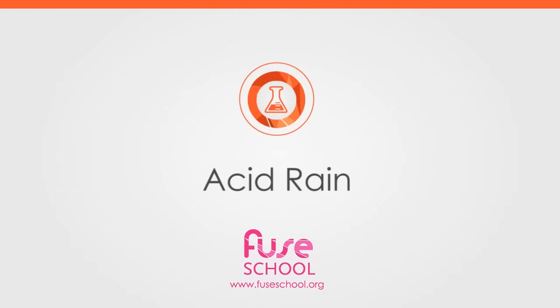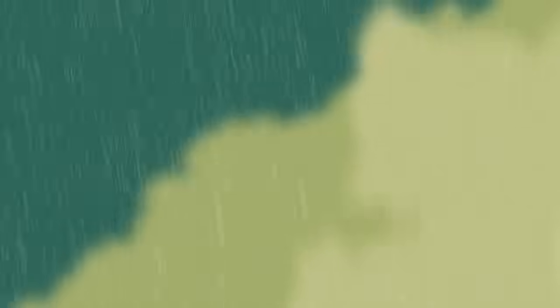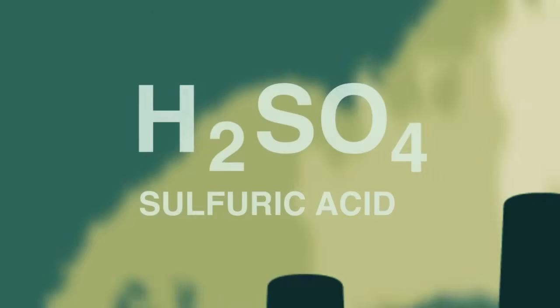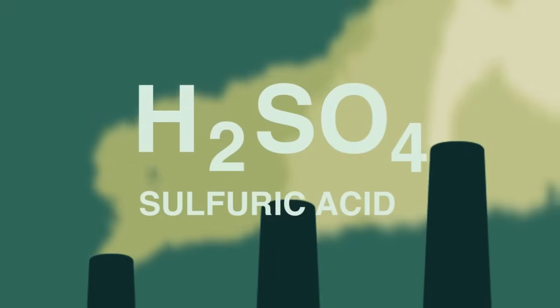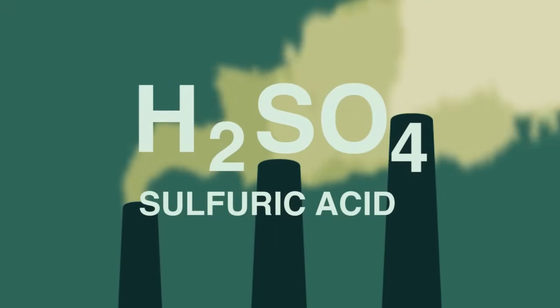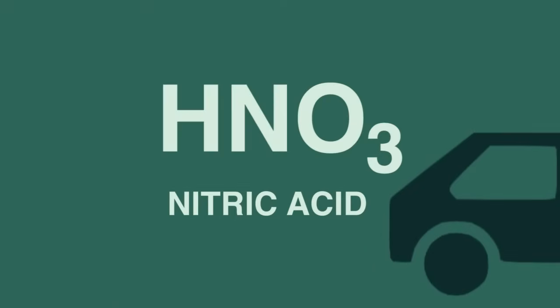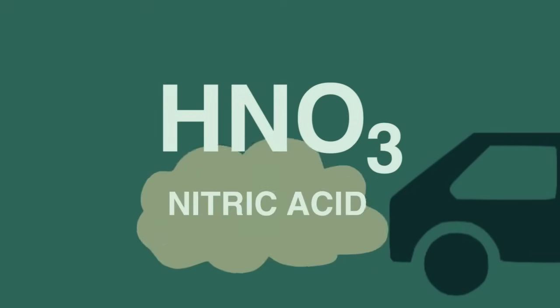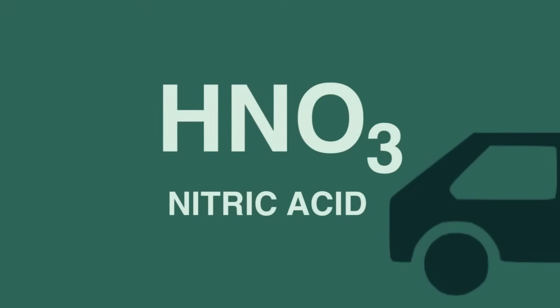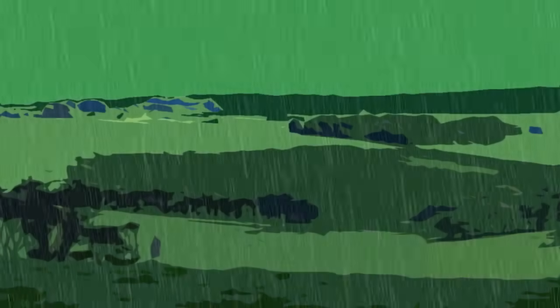In this video you will learn that in two quite different ways the burning of fossil fuels can cause our rain to become acidified. Sulfuric acid arises from the burning of coal and oil, mainly in power stations, whereas nitric acid arises from the exhaust pipes of our motor vehicles. You will also see some of the effects acid rain has on our environment.